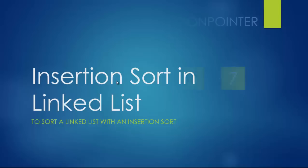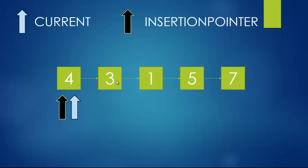So here I have two pointers: there is 'current' and there is a pointer called 'insertion pointer'. The insertion pointer starts from the head and goes one before the current, and current basically goes through the entire list one element at a time. At first, current and insertion pointer are both pointing to the same element — the head, which in this case is four.